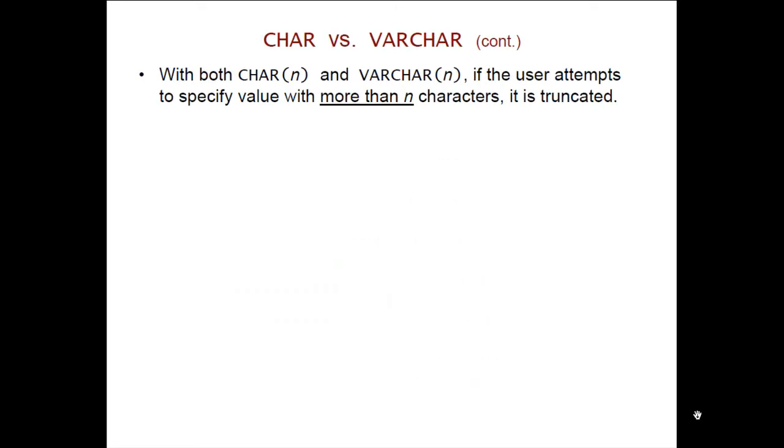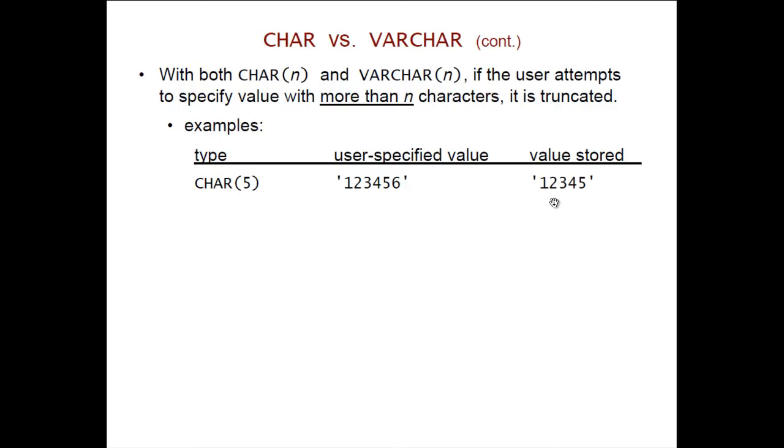Now with both CHAR(n) and VARCHAR(n) if the user tries to specify a value that has more than n characters where n is the number that we specified when we listed the type, that value is going to be truncated. So for example if we have a column of type CHAR(5) and the user attempts to put in a value with six characters it's going to be stored with just the first five and that sixth character will be truncated.